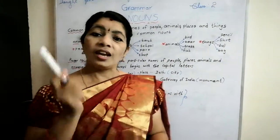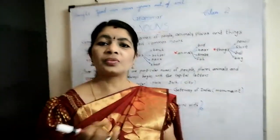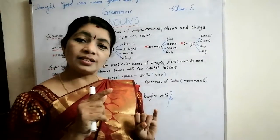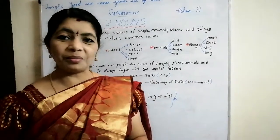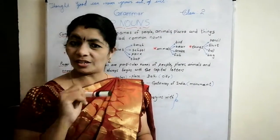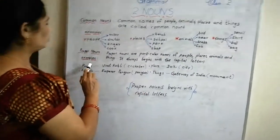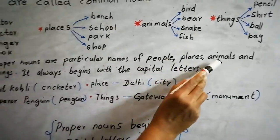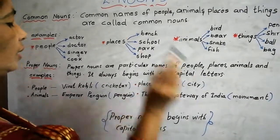Do you know, students? In first class we learned that buildings, rivers, mountains, names of the days of the week and months — these are all proper nouns. Do you remember? Yes, good. You are very good students. Proper nouns are particular names of people, places, animals and things. They always begin with capital letters.